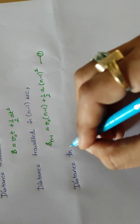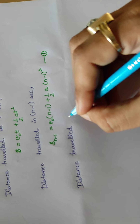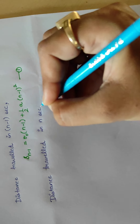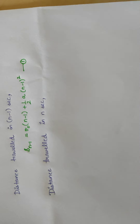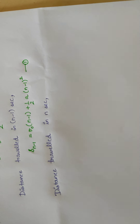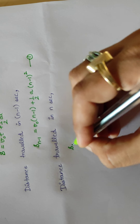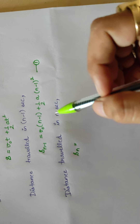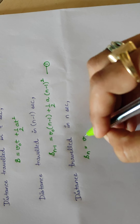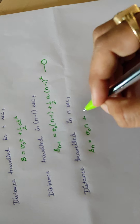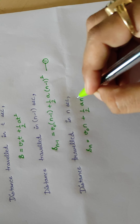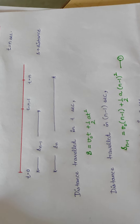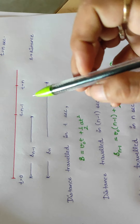Next, we find the distance travelled in n seconds. When the time is considered to be n seconds, we simply replace T by n. So S(n) equals v₀n plus half A times n squared. Mark this as equation number 2.